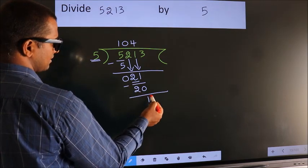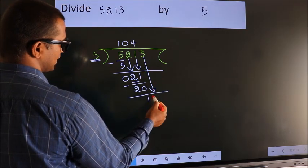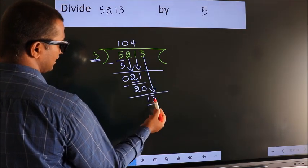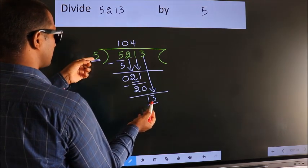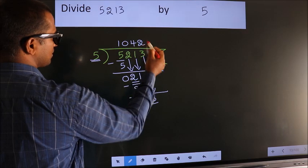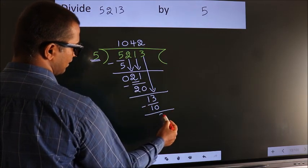After this, bring down the beside number. So 3 down. So 13. A number close to 13 in the 5 table is 5 twos, 10. Now we subtract. We get 3.